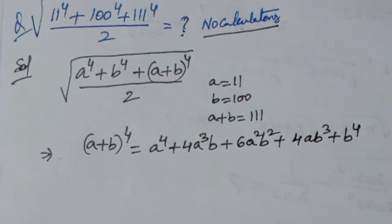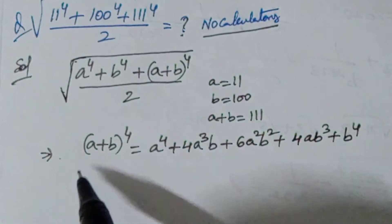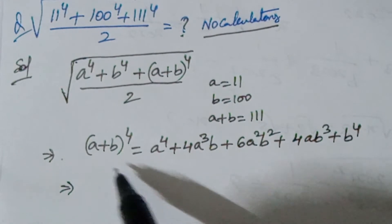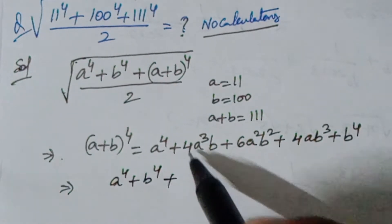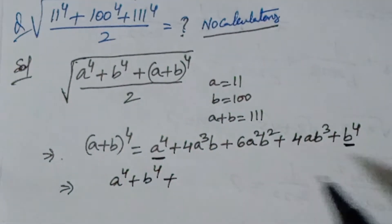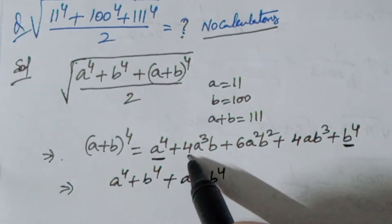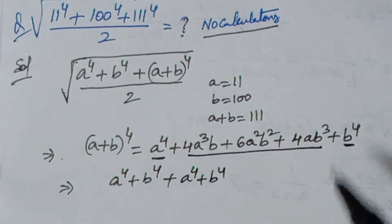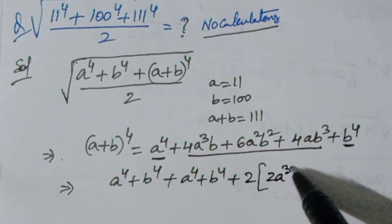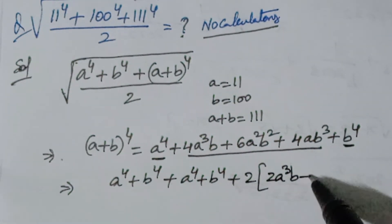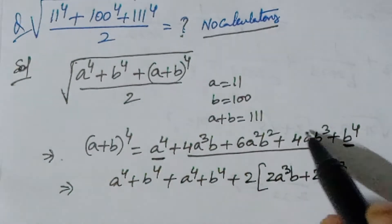I will take the square root at last and just do the calculation part here. So we have a⁴ + b⁴, plus here also we are having a⁴ + b⁴. From the remaining terms I am taking 2 common, so taking 2 common here we get 2a³b + 2ab³.